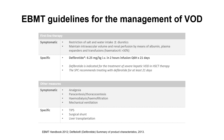We have one excellent drug that works perfectly: defibrotide. The dose is 6.25 mg/kg as a two-hour infusion every six hours for at least 21 days according to the SPC, and this is the only registered drug. We also use symptomatic treatment: restriction of salt and water intake, plus or minus diuretics. However, we must maintain intravascular volume and renal perfusion by means of albumin, plasma expanders, and transfusions to avoid kidney injury. Other supportive measures include analgesia, paracentesis when needed, hemodialysis when needed, and surgical interventions when needed.